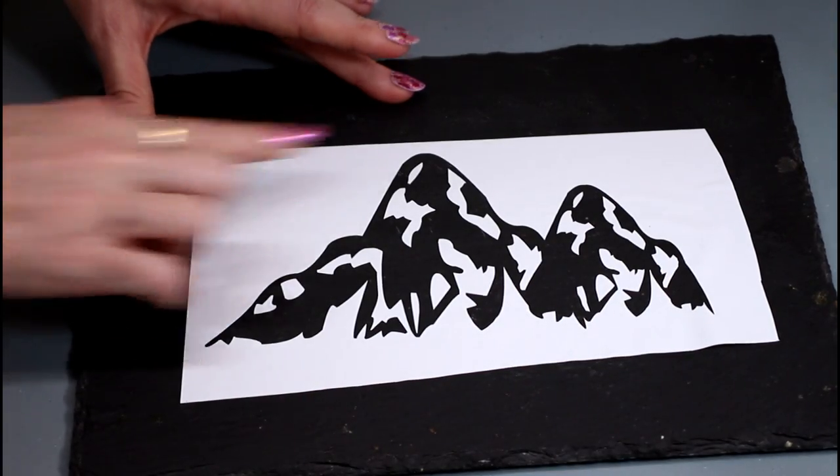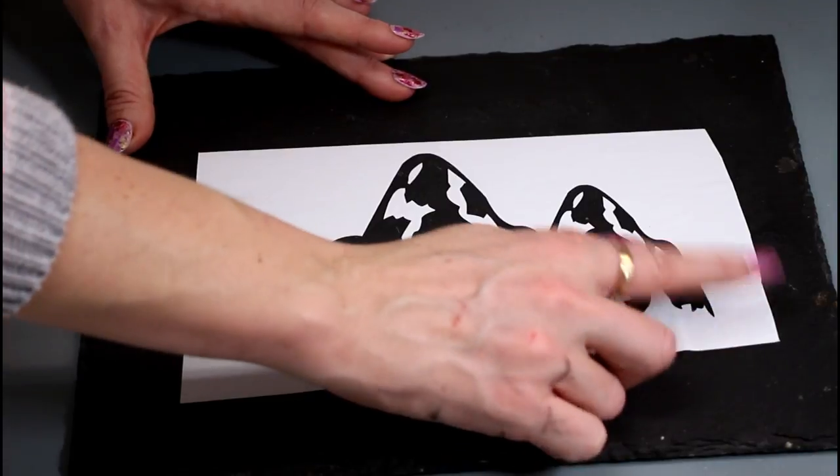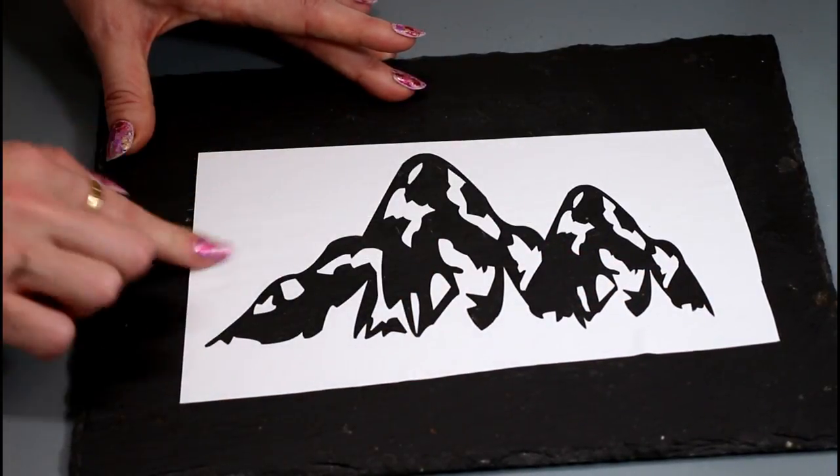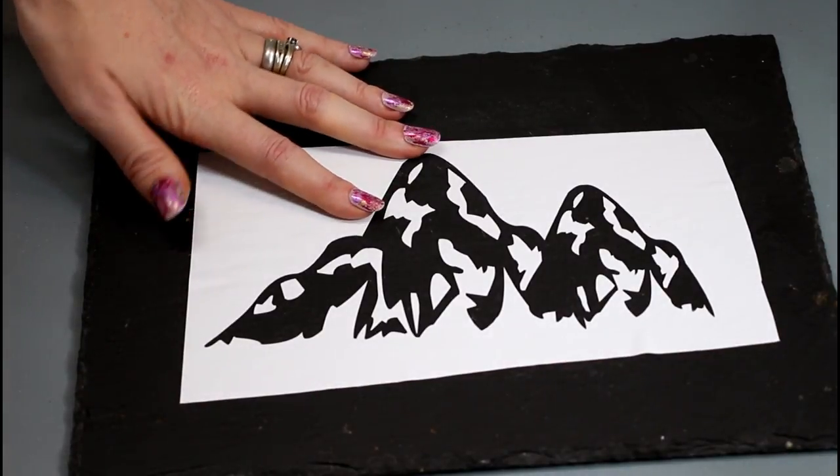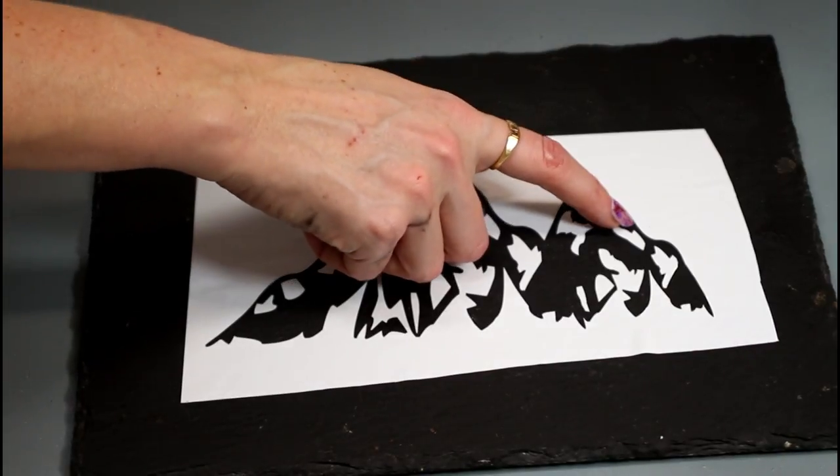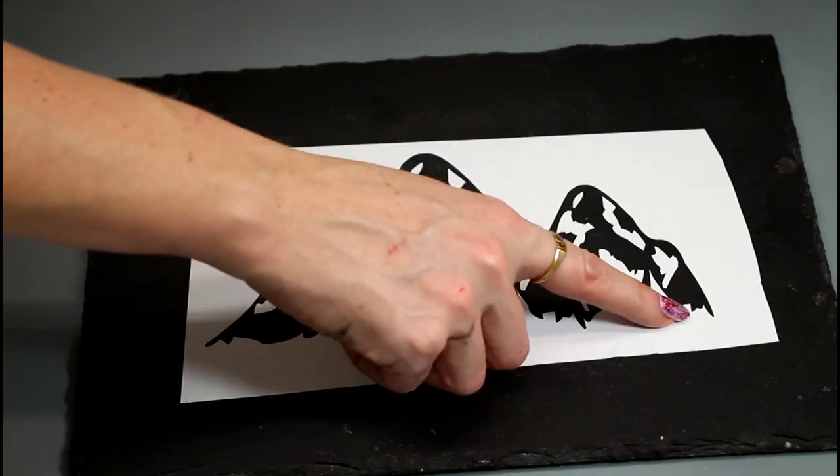So I'm then just going to go in with my finger to begin with and I'm just going to completely smooth down my vinyl. Now because we're using this as a stencil and we're going to use etching cream, you want to ensure that you've got no lift up and no gaps because you don't want any of the cream to bleed through.